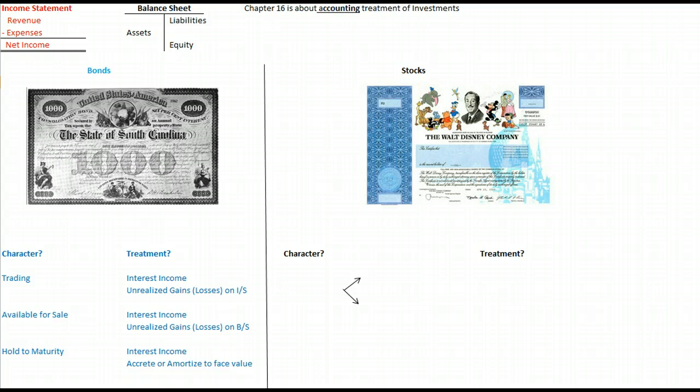It depends on what kind of bonds they are. If they are trading bonds, in other words bonds that we bought with the intention of buying and selling to try to make money and we're actively managing these bonds, we're going to book the interest income just like you would expect: debit cash, credit interest revenue.